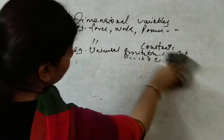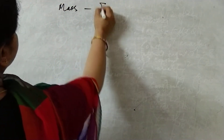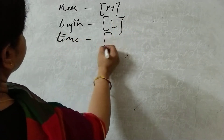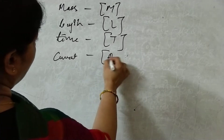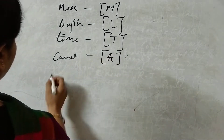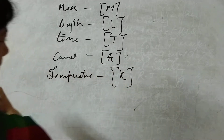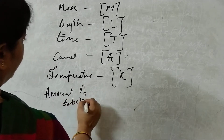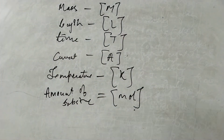Now let us start with how to write a dimensional formula. We look for the fundamental quantities. For mass we write M, for length we write L, for time we write T, for current some books write A or I (ampere), for temperature some books write K, and for amount of substance we write mole. We take the help of these fundamental quantities when writing a dimensional formula.